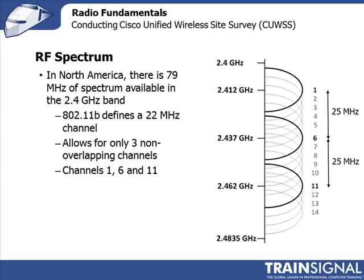Looking at this 79 MHz of spectrum, the 802.11 Wi-Fi standard has defined it as 11 channels — channels 1 to 11. There are also channels 12, 13, and 14 to cater for international spectrum, because different countries have different amounts of spectrum available. For instance, Europe has 13 channels defined. When I deploy my Wi-Fi network, I need to choose which channel to deploy each access point on. If I deploy one access point on channel 1 and an adjoining access point on channel 2, you can see that the spectrum overlaps, and this will cause significant interference.